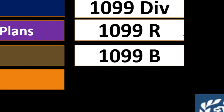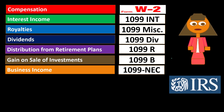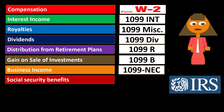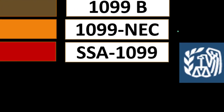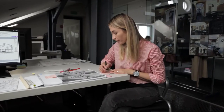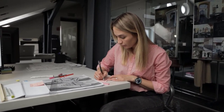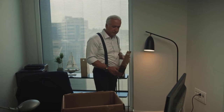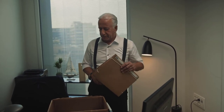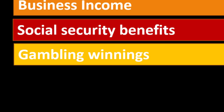Gain on the sale of investments such as stocks and bonds is reported on a 1099-B. Business income for contractors is now reported on the 1099-NEC, a relatively new form that used to be part of the 1099-MISC. Social Security income is reported on an SSA-1099 — this is the benefit you receive in retirement, not the tax you pay in as an employee or self-employed person — and you need to determine whether you have to report that as income.